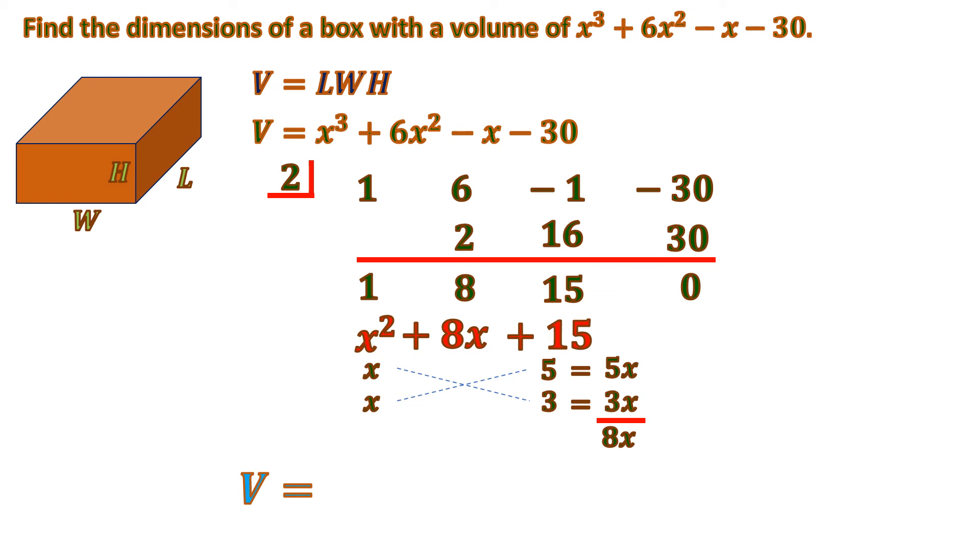So the factored form of the polynomial is x minus 2, that is the x minus a where our a is the root which is 2, times the factored form of x squared plus 8x plus 15, which is x plus 5 times x plus 3.